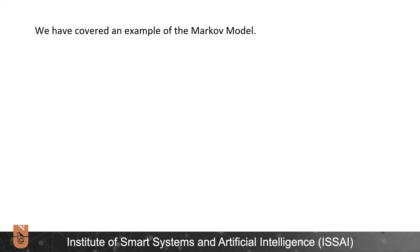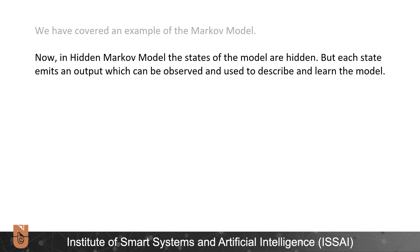So far we have covered an example of the Markov model. Now in Hidden Markov Model the states of the model are hidden but each state emits an output which can be observed and used to describe and learn the model.